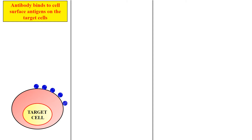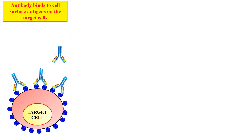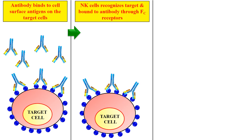Here is the ADCC mechanism. A target cell is shown, and the blue dots represent surface markers which act as antigens. The antibodies recognize these surface antigens and bind to the target cell, which may be a tumor cell or a virus-infected cell. Once the antibody binds to the target cell, the natural killer cell — which also has a receptor for this antibody — uses those receptors, represented as purple molecules, to recognize the antibody.